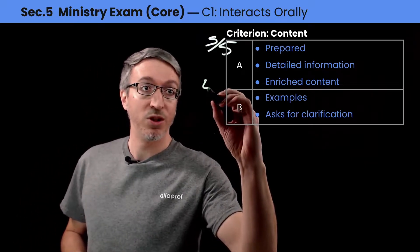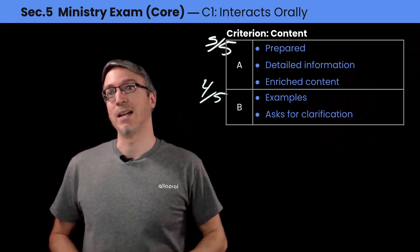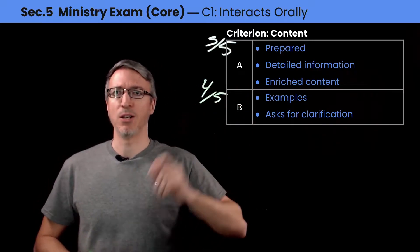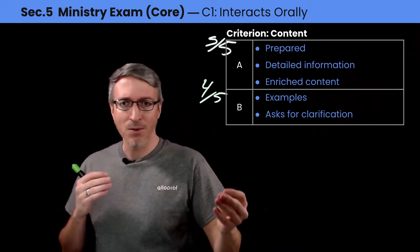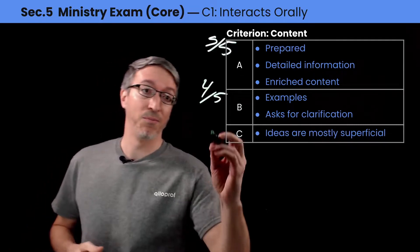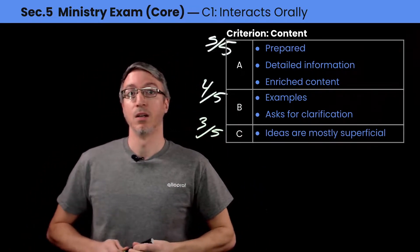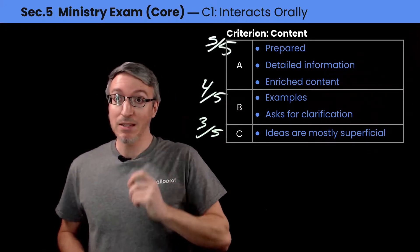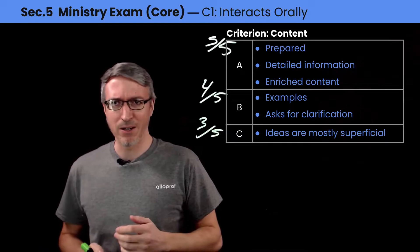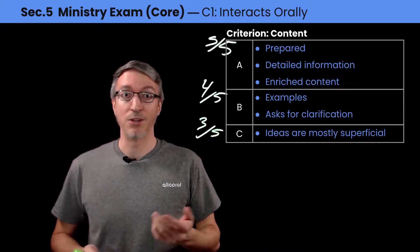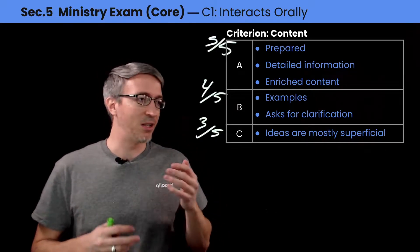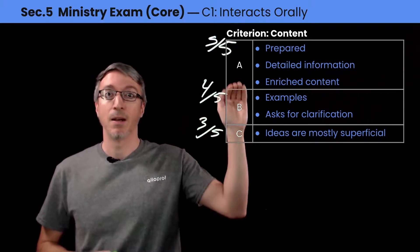Four on five — which is very good — means you're using more examples from your own life and from what you saw around you, but you don't have as much enriched content. You do ask for clarification and show curiosity, which is very good. Three on five — the passing grade — means your ideas are mostly superficial. You know the topic but did not dig into it. For example, if the topic is about drugs and you only say 'drugs are bad,' that's superficial. You need to add more details, like the consequences of drugs, to get more points.